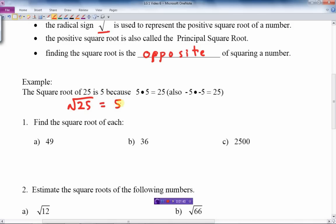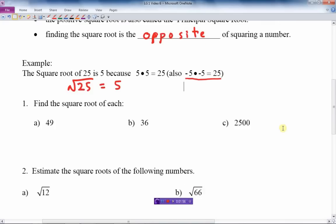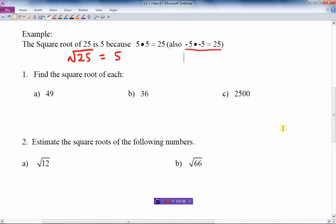That is the principal square root. Now, we note that negative 5 times negative 5 equals 25 as well, but we're just going to talk about, in this lesson, positive square roots only. So square root of 25 is 5 because 5 times 5 gives me 25. And if I just do the opposite, I square 5, in other words, I get 25.